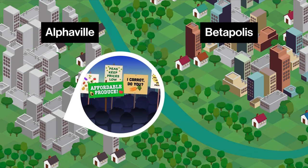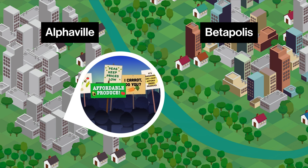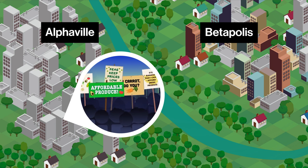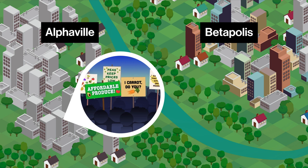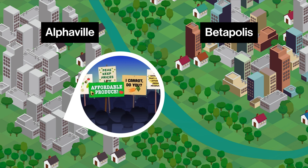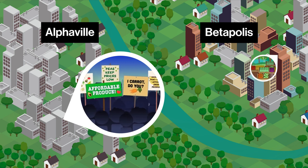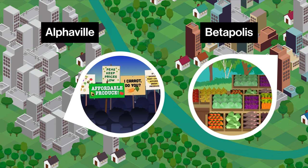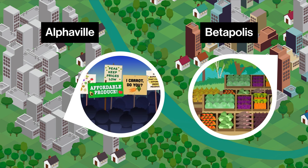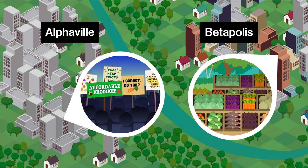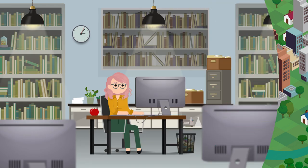A community group in the city of Alphaville recently campaigned against the high prices for fresh fruit and vegetables in the city that make it difficult for many families to afford them. Meanwhile, the neighboring city of Betaopolis is famous for its weekly markets subsidized by the city, where citizens can buy lots of fruits and vegetables much cheaper. To investigate this situation, a researcher in Alphaville called Ashley wants to compare food consumption in both cities.